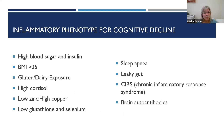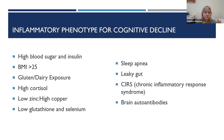The inflammatory phenotype — we've talked a lot about high blood sugar and insulin, major obesity, being overweight even, contributes to that inflammatory cycle. Exposure to foods that you're intolerant of, too much stress — that creates inflammation. Incorrect ratio of zinc to copper is also inflammatory. Low glutathione and selenium are inflammatory.